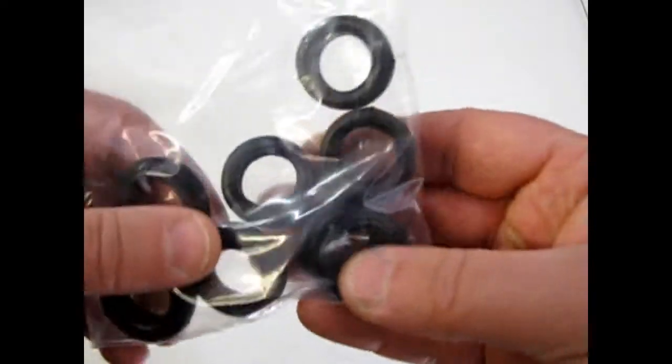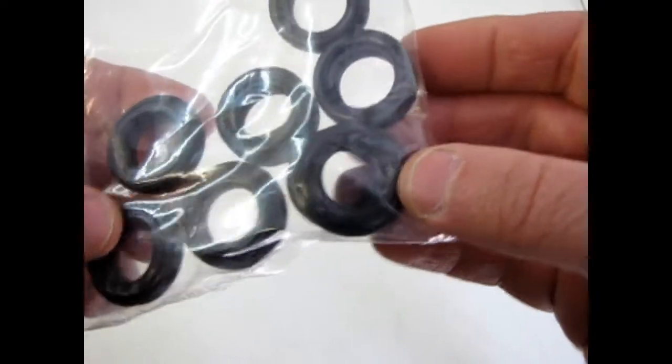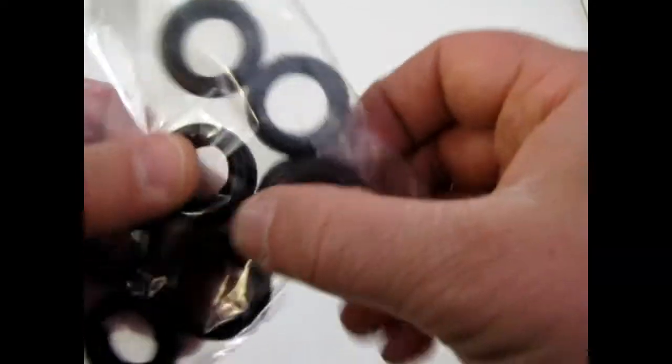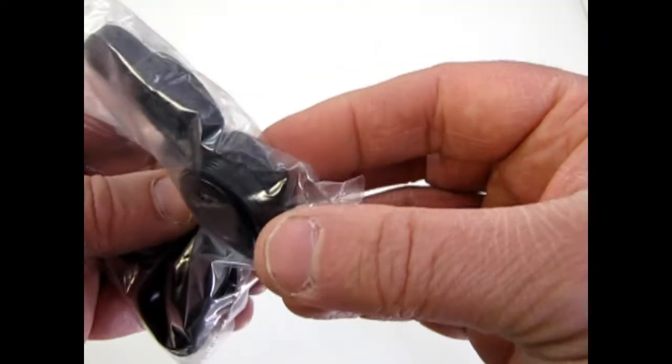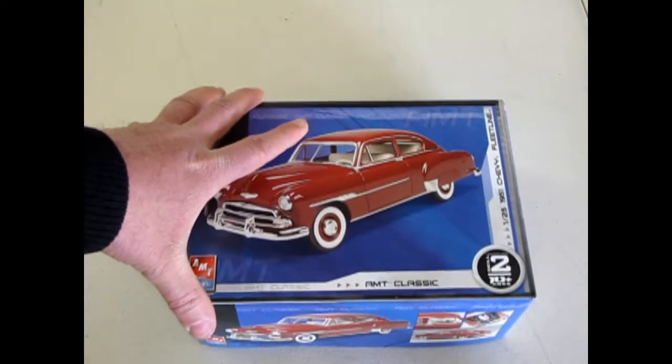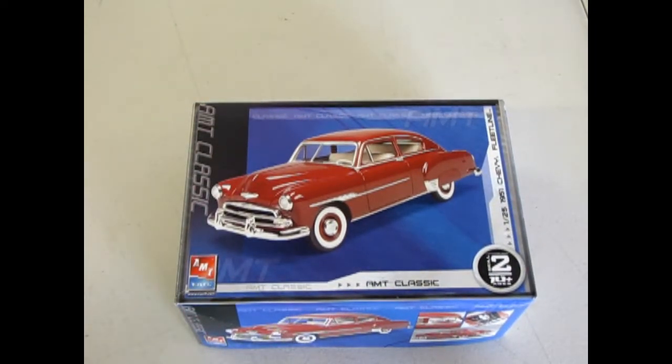And last but not least, we have our tires. And they give you again the Goodyear and the Firestone tires. And that brings us to the conclusion of what's in the box for our AMT 51 Chevy Fleetline.